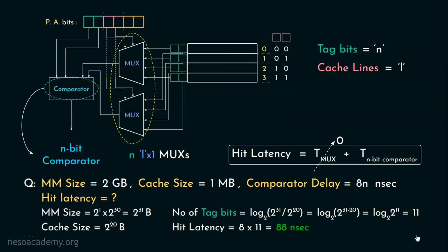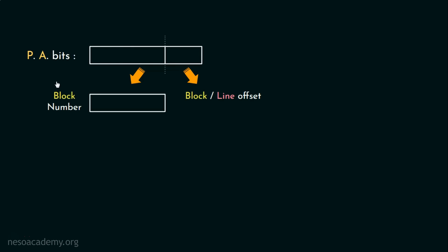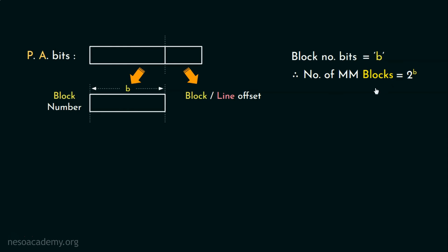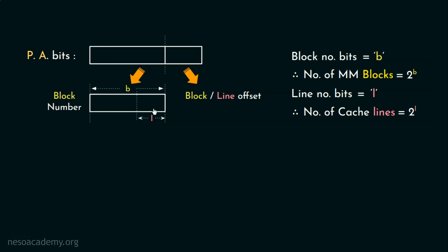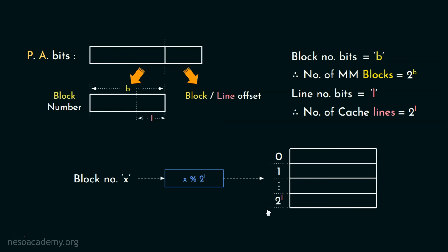Now let's talk about the limitations of Direct Memory Mapping. In direct mapping, the physical address is divided as block number and block offset. If b bits are assigned for the block number, the main memory has 2^b blocks. Having l bits for the line number (sometimes called index number) means there are 2^l cache lines. From the b bits, the least significant l bits are the remainder when the block number is divided by 2^l. So if x is the block number, then x mod 2^l gives the corresponding cache line number for block x.